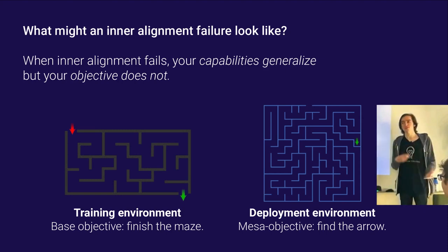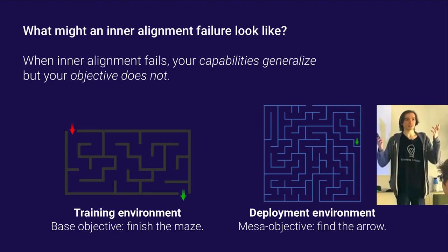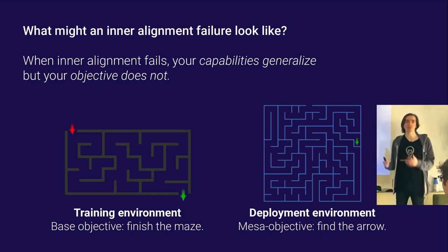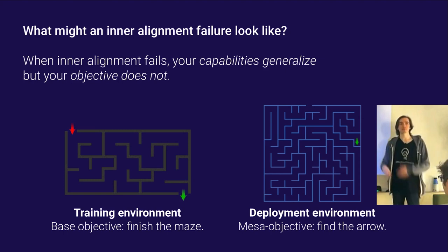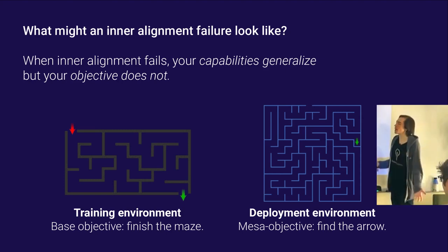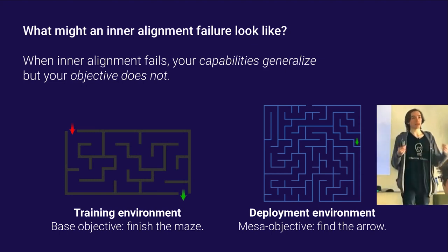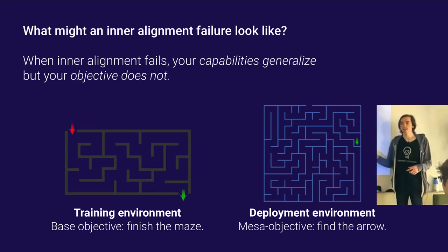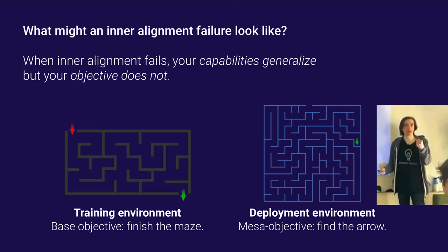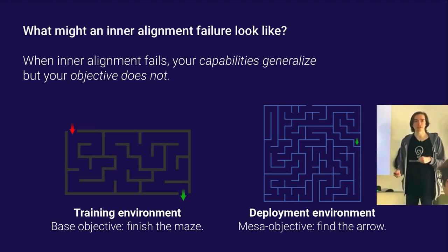You've probably heard stories of outer alignment failures. Classical examples are things like paperclip maximizers — you want to make the most paperclips in your factory and then it destroys the world because that's the best way to make paperclips. I want to provide more classic examples of inner alignment failures, where the model ends up optimizing for something different than the thing you specified.